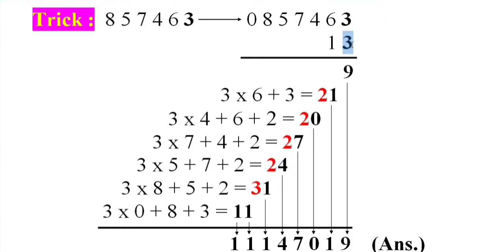3 into 8 plus 5 plus carry 2 equal 31. 3 into 0 plus 8 plus carry 3 equal 11. So write down 9, 1, 0, 7, 4, 1, 1, 1. This is answer: 11147019.